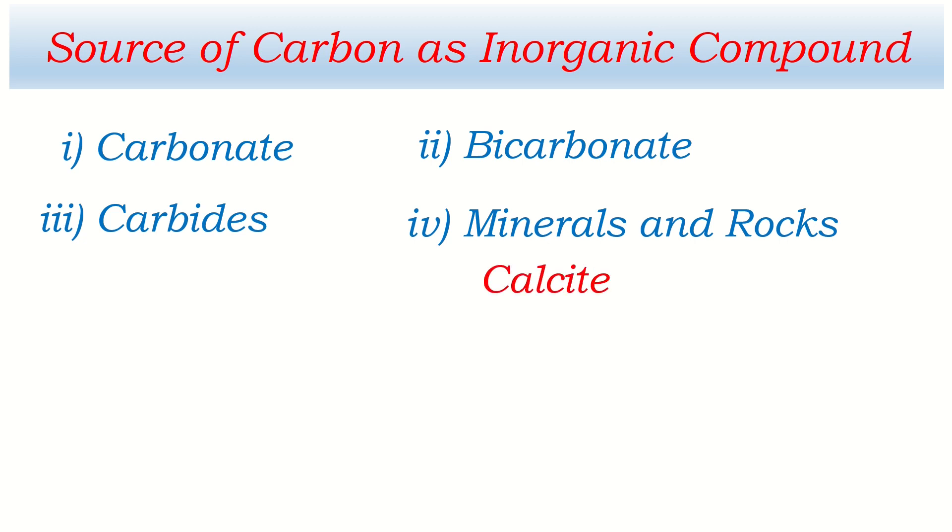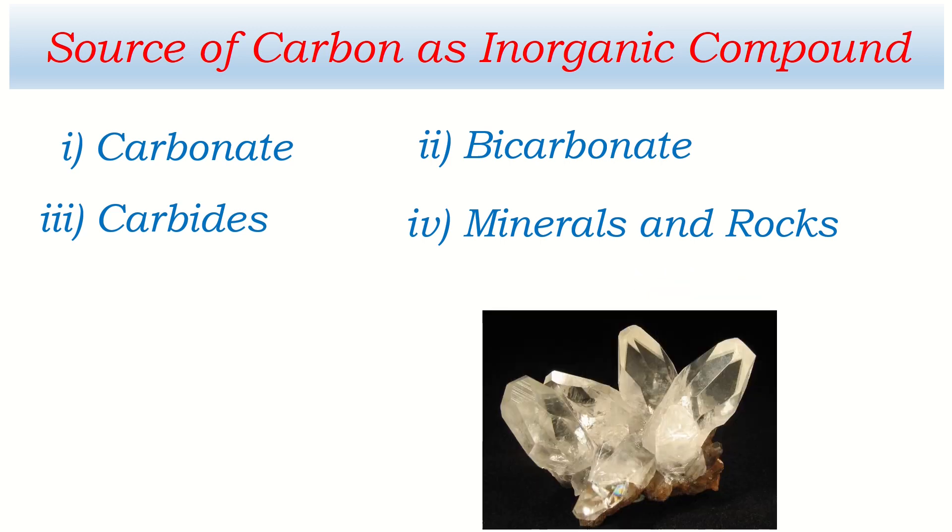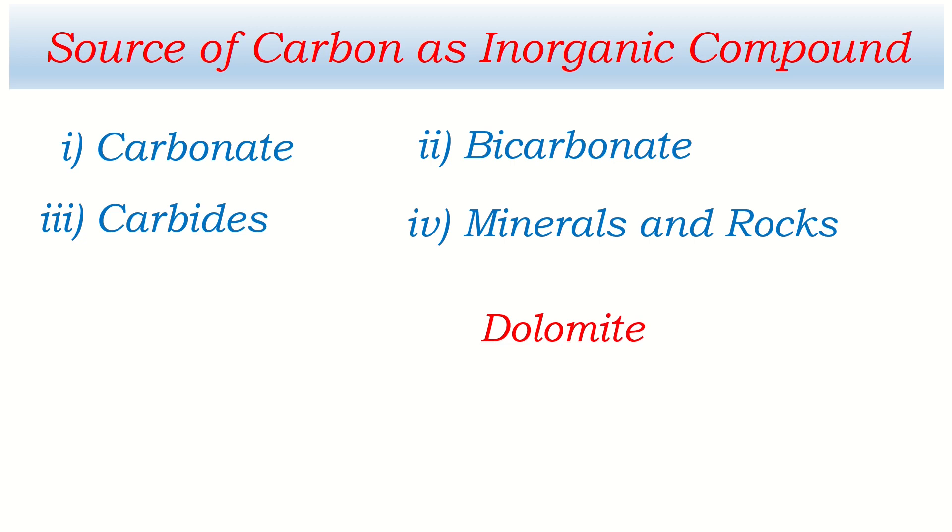Calcite. Calcite is one of the sources of carbon. Actually it is made up of calcium carbonate and it looks like this. And another mineral is dolomite and this is also the source of carbon and its formula is CaMg(CO3)2 and this also contains carbon.